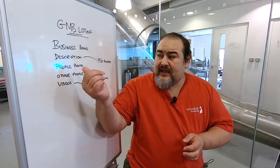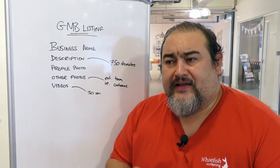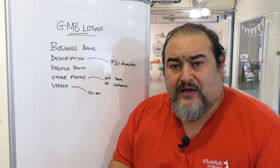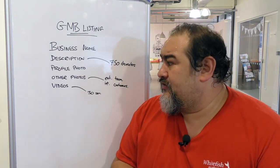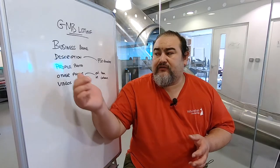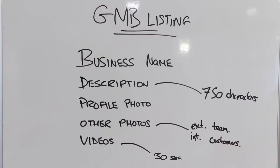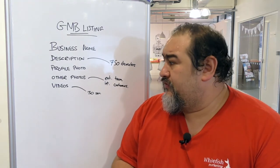Next, add in some photos. People sometimes forget to add photos, but photos give something like a 35% higher chance of a click-through. So do consider adding a profile photo — it's what everyone's going to see on your Google My Business listing, so just add one in.